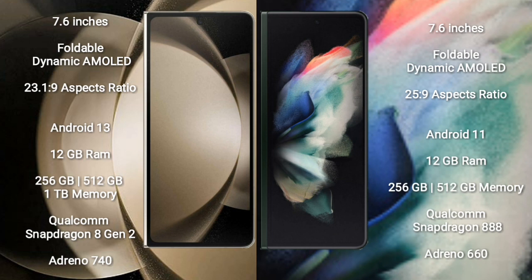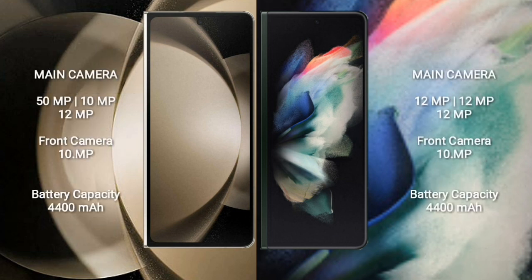Samsung Galaxy Z Fold 3 comes with 12GB RAM and 256GB or 512GB internal storage, Qualcomm Snapdragon 888 processor and GPU Adreno 660. Samsung Galaxy Z Fold 5 features a triple camera setup: 50MP plus 10MP plus 12MP and front camera 10MP. Samsung Galaxy Z Fold 3 features a triple camera setup: 12MP plus 12MP plus 12MP and front camera 10MP.